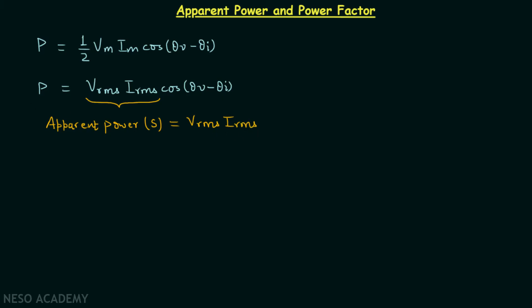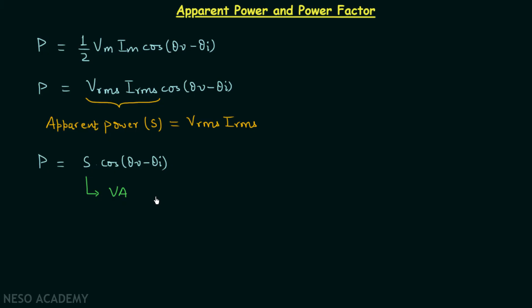So we can say that the average power P is equal to the apparent power S multiplied by cos(θv − θi), where S is the apparent power and it is measured in volt-amperes. We measure apparent power in volt-amperes because we want to distinguish it from the average or real power, which is measured in watts.